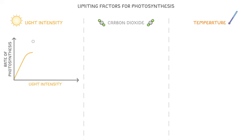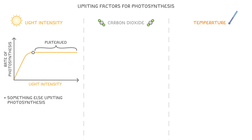But the rate only increases up to a point. At the point where the line flattens out, we can say that it has plateaued. This means that there must be something else limiting photosynthesis, such as carbon dioxide concentration or temperature.